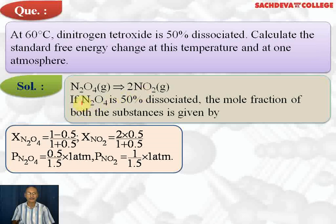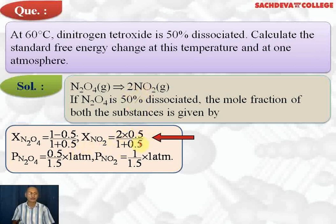Because 50% dissociates, N₂O₄ remaining is 1 − 0.5 = 0.5, and NO₂ formed is 2 × 0.5 = 1.0. Total moles = 1.5. Mole fraction of N₂O₄ = 0.5/1.5. Mole fraction of NO₂ = 1.0/1.5, because the coefficient of NO₂ is 2. Partial pressure of N₂O₄ = (0.5/1.5) × 1 atm, and partial pressure of NO₂ = (1/1.5) × 1 atm.